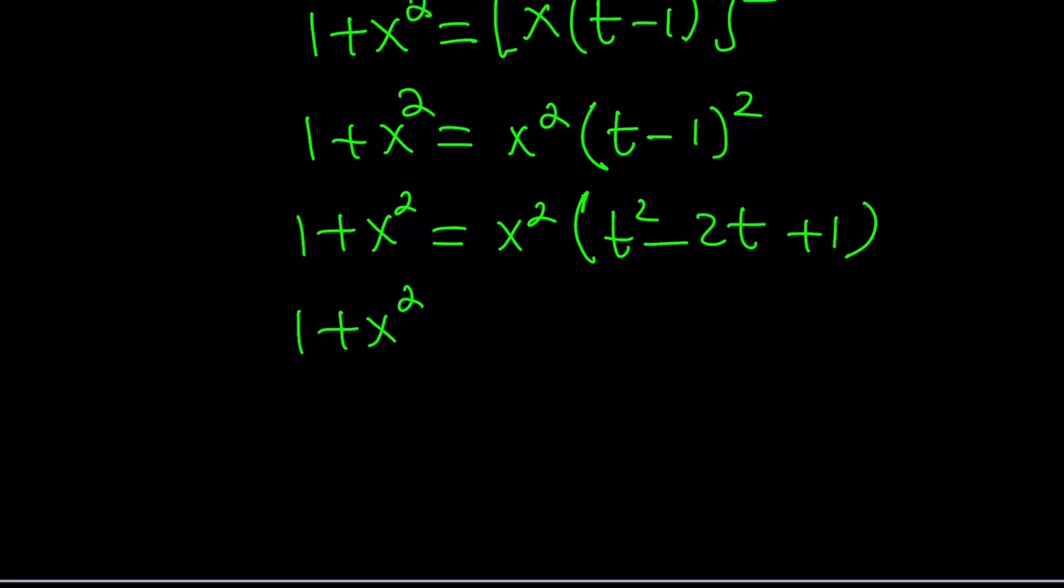And from here, if we distribute x squared, we're going to get a simpler expression, right? Because something is going to cancel out. x squared t squared minus 2t x squared plus x squared. And yes, x squared cancels out.